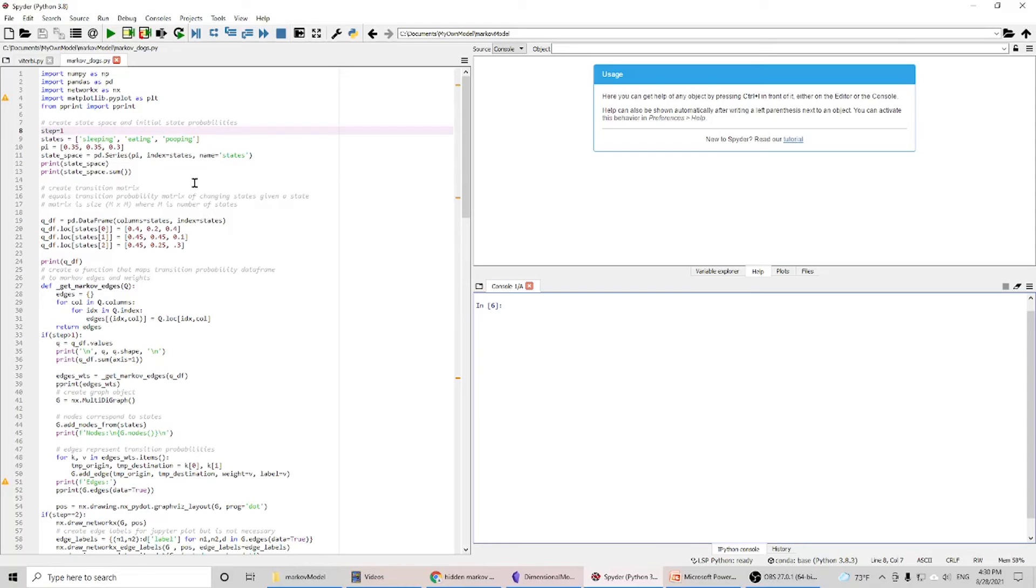We can have three observations of the lazy dog: sleeping, eating or pooping. And we have the transition matrix here. So this is our transition matrix.